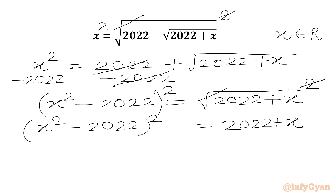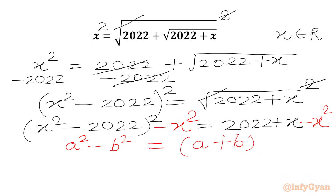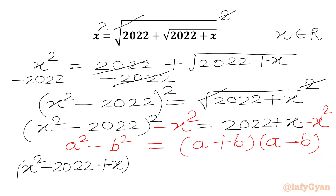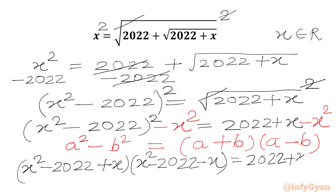Now we will use one algebraic manipulation step — we will subtract X squared from both sides. In the LHS we have an A squared minus B squared form, so we can apply the identity A squared minus B squared equals (A plus B)(A minus B). Applying this to the LHS we get (X squared minus 2022 plus X)(X squared minus 2022 minus X) equals 2022 plus X minus X squared.